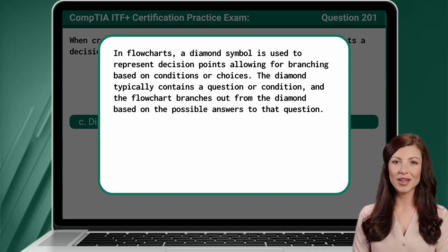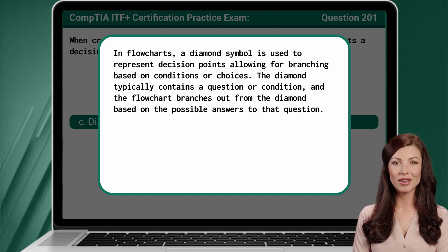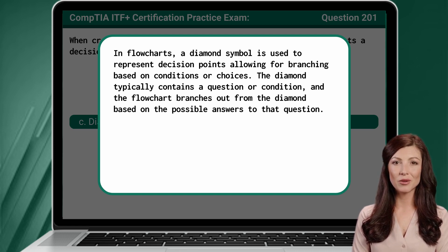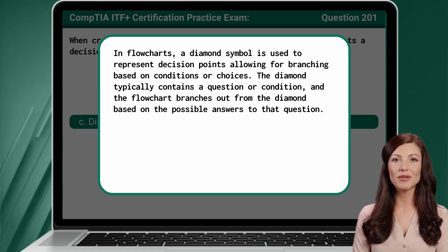In flowcharts, a diamond symbol is used to represent decision points, allowing for branching based on conditions or choices. The diamond typically contains a question or condition, and the flowchart branches out from the diamond based on the possible answers to that question.